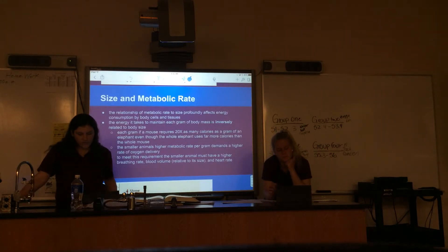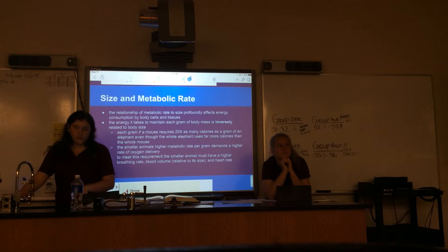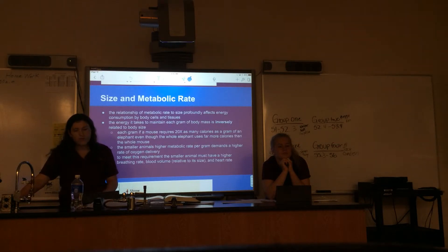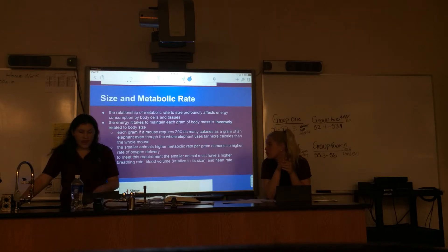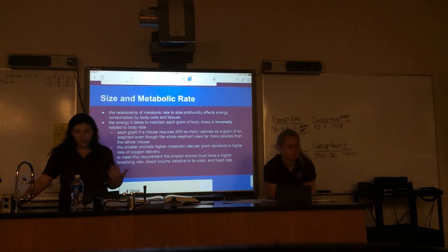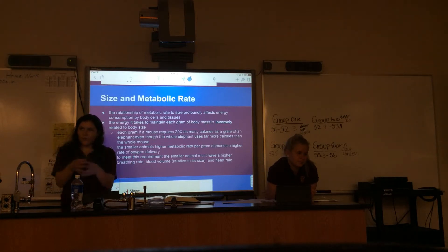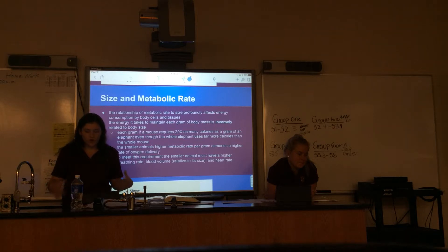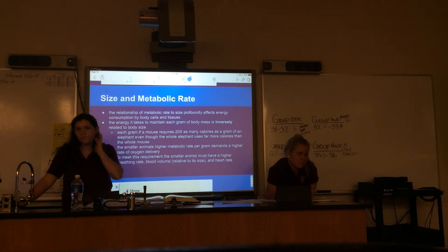The energy required to maintain each gram of body mass is inversely related to body size. Each gram of a mouse requires 20 times as many calories as a gram of an elephant, even though the whole elephant uses far more calories overall. A smaller animal's higher metabolic rate per gram demands a higher rate of oxygen delivery, requiring a higher breathing rate, blood volume relative to size, and heart rate. Per gram, smaller animals consume more energy but burn it faster; the overall total energy for a larger animal is still greater.